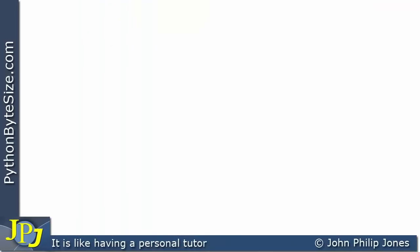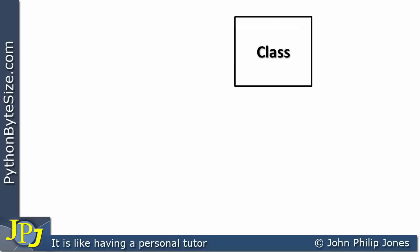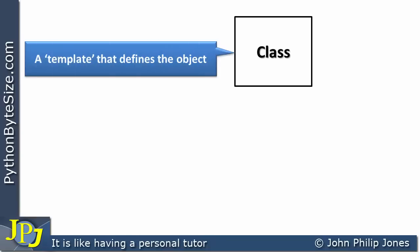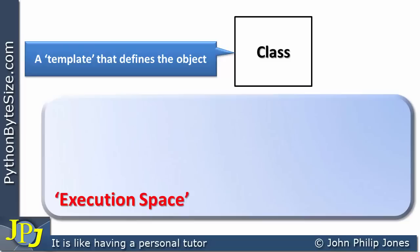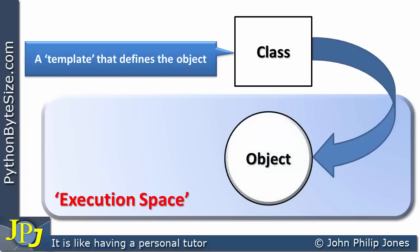Within an object-orientated program, there is a clear relationship between a class and an object. A class is a template that defines an object — a blueprint from which objects are actually created. I also consider something referred to as the execution space, which is the environment in which an object actually exists. From the class, an object is created, and it exists in the execution space in its own right.